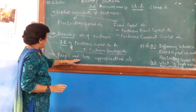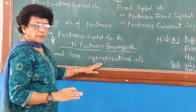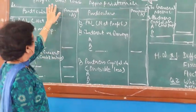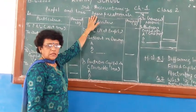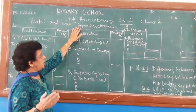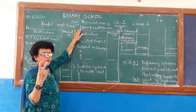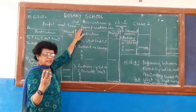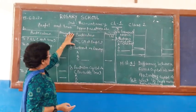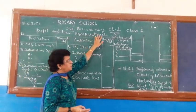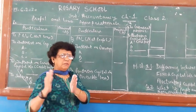The third important account we are going to learn is the Profit and Loss Appropriation Account. In Class 11, you learned that the final accounts consist of: number one, the Trading Account; number two, the Profit and Loss Account; and number three, the Balance Sheet. In partnership final accounts, we add one more account — the Profit and Loss Appropriation Account. Appropriation means the allocation of total profit among the partners.